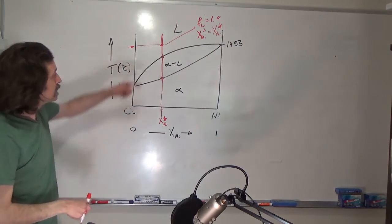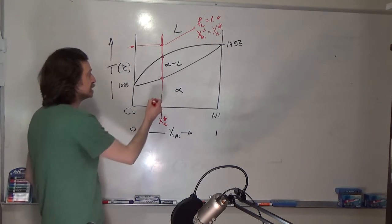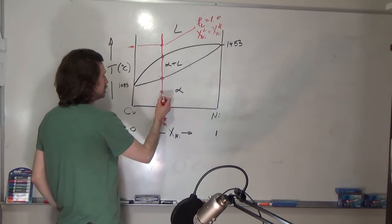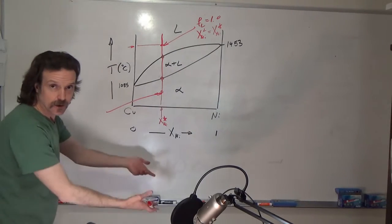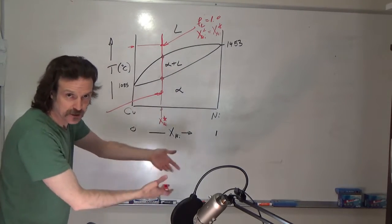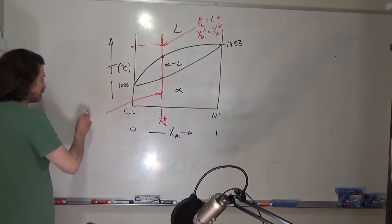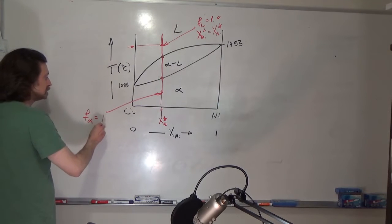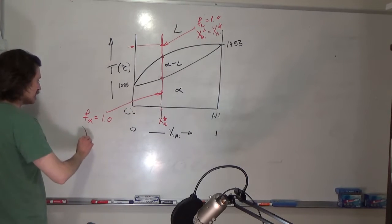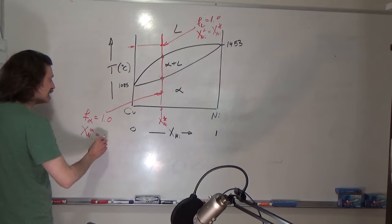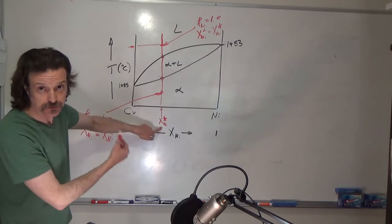In a very similar fashion, if you cool down into the region where you know you're in all alpha, you can say what phases are present: it's 100% alpha, so F_alpha equals 1. The composition of that phase, x_Ni^alpha, is equal to x_Ni star — again, just the composition of the total system.